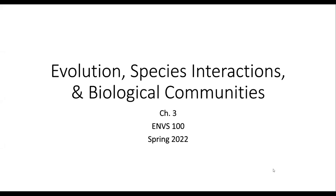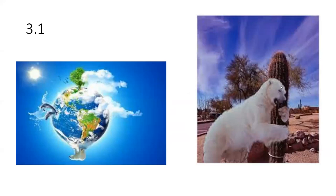For chapter three, what we're going to be looking at is evolution — how that process plays out, and how that ultimately led to the biodiversity we have on the planet today. Biodiversity just means the different organisms we have on this planet; not everything is the same.